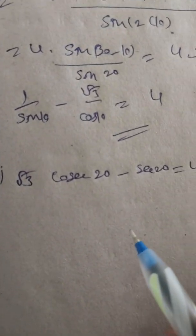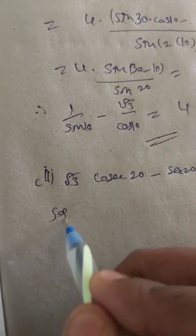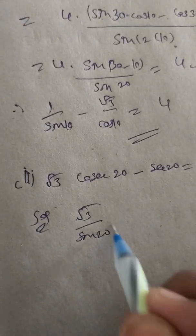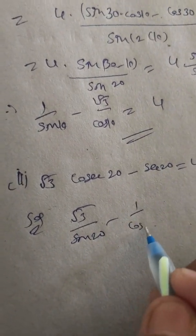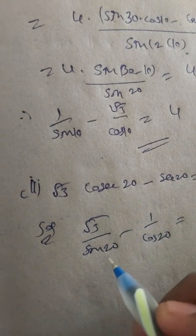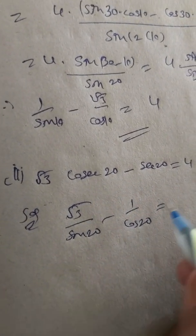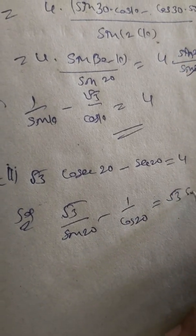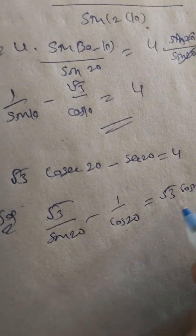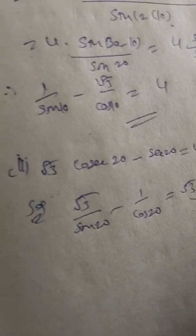Second problem: Prove that √3/sin(20°) minus 1/cos(20°) equals 4. Solution: Taking LCM, √3·cos(20°) minus sin(20°) divided by sin(20°)·cos(20°).